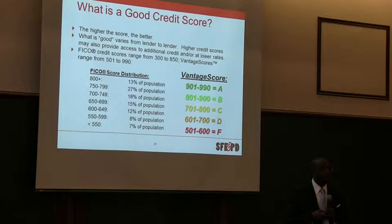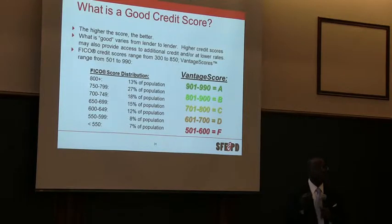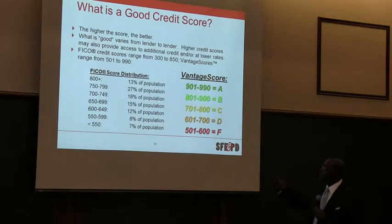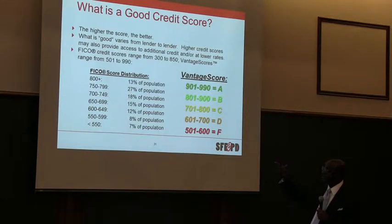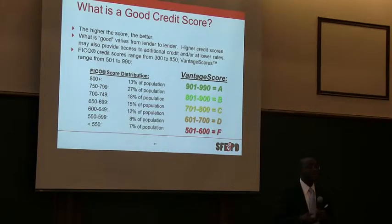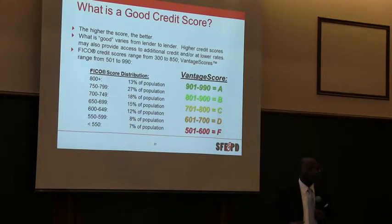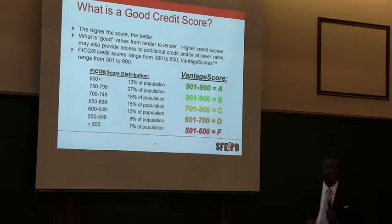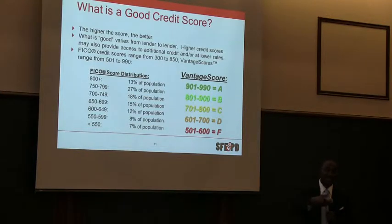Most lenders use what is called the FICO score to determine whether or not they're going to make a loan to you. The FICO score ranges from 300 to 850. The higher your score, the lower the interest rate on the loan; the lower your score, the higher the interest rate. Right now only 13% of the population has a score of 800 and above, and 27% score between 750 and 799. Your goal is to have a credit score of 750 and above to get the best interest rate on credit cards, car loans, and so on. Try to go above 800 if you can.